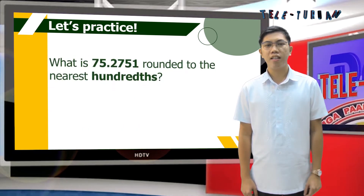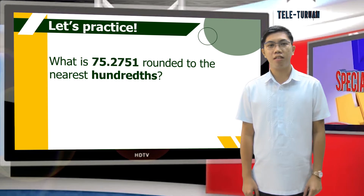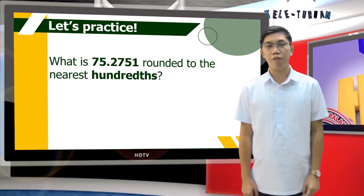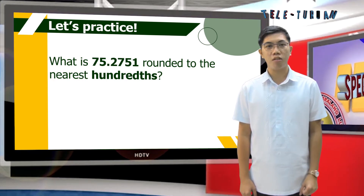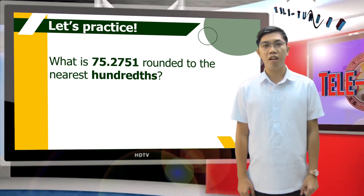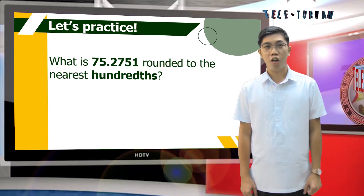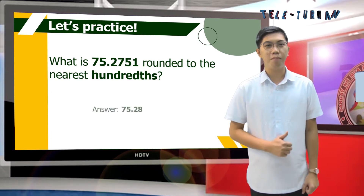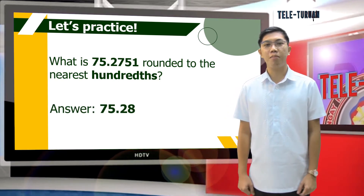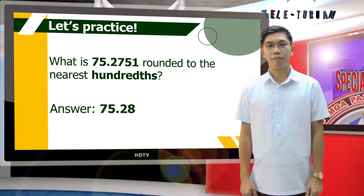What is seventy-five and two thousand seven hundred fifty-one ten-thousandths rounded to the nearest hundredths? The answer is seventy-five and twenty-eight hundredths.